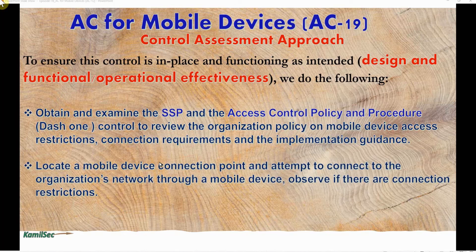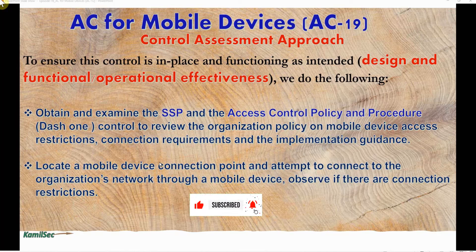The next assessment step is to locate a mobile device connection point and attempt to connect to the organization's network through a mobile device. If you have a mobile device at hand, see if you can connect to the Wi-Fi access point. Observe if there are any connection restrictions — if there are, good; if not, then you know there is a problem. This verifies that the restrictions stated in the access control policy, procedure, and SSP are actually effective. Alternatively, if you can validate through a screenshot of the configuration of the access point and similar evidence, that will also suffice.